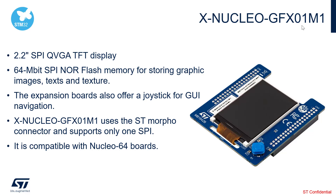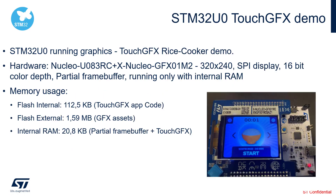We are using the xNucleo GFX01M1 expansion board. This kit features a 2.2-inch SPI QVGA TFT display and also embeds a 64-megabit SPI NOR flash memory for storing graphics images, texts, and textures. As you can see, there is also a joystick for GUI navigation, which we'll be using during this demonstration. This xNucleo is compatible with Nucleo 64 boards, and there is also an xNucleo graphics variant compatible with the Nucleo 144 format.